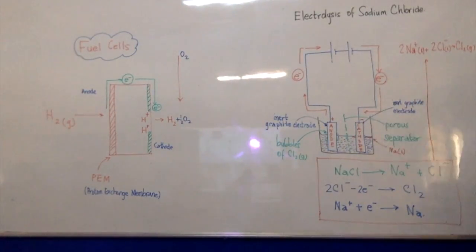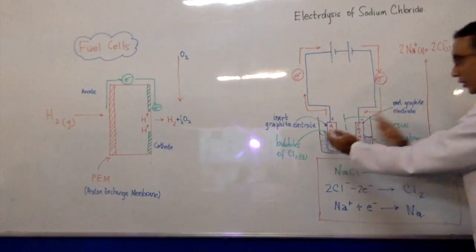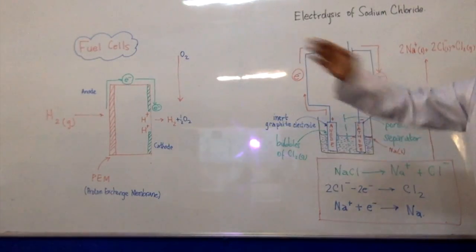At the cathode, reduction is happening. But in the electrolytic cell, the charges are reversed compared to the voltaic cell.